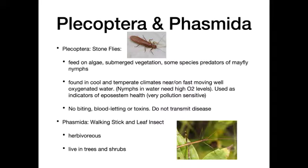Plecoptera and Phasmida — stoneflies don't really occur here in Florida as they like cooler environments. Sometimes they feed on mayfly nymphs. They like fast-moving water with high oxygen levels, as their nymphs require very high oxygen. They are also used as bio indicators for ecosystem health. They don't bite and there's no disease transmission. The Phasmida — walking sticks and leaf insects — are masters of disguise, herbivorous, and live in trees and shrubs.